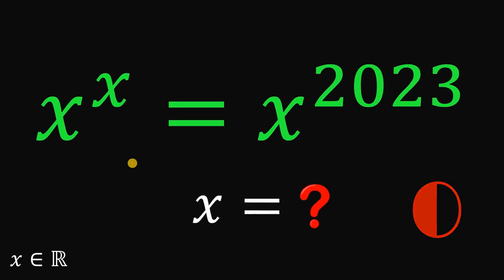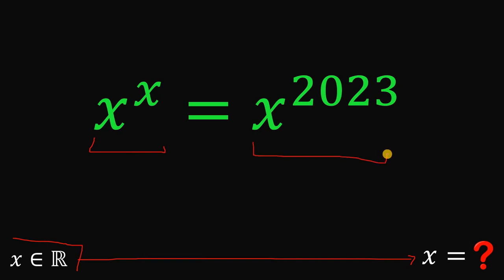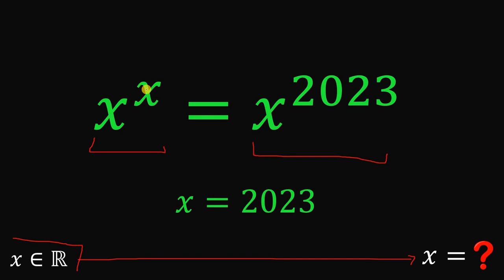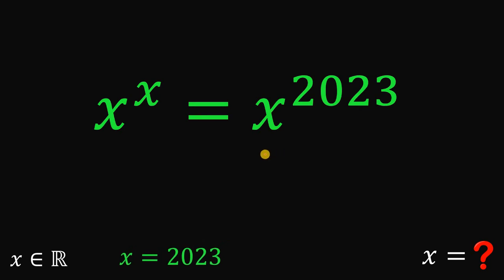Let's answer this question together. Our goal is to solve for the real value of x that satisfies the equation x raised to the power of x equals x raised to the power of 2023. An obvious answer is x equals 2023, because if we replace all x with 2023, we have 2023 raised to 2023 equals 2023 raised to 2023 — they are equal. But is this the only solution?